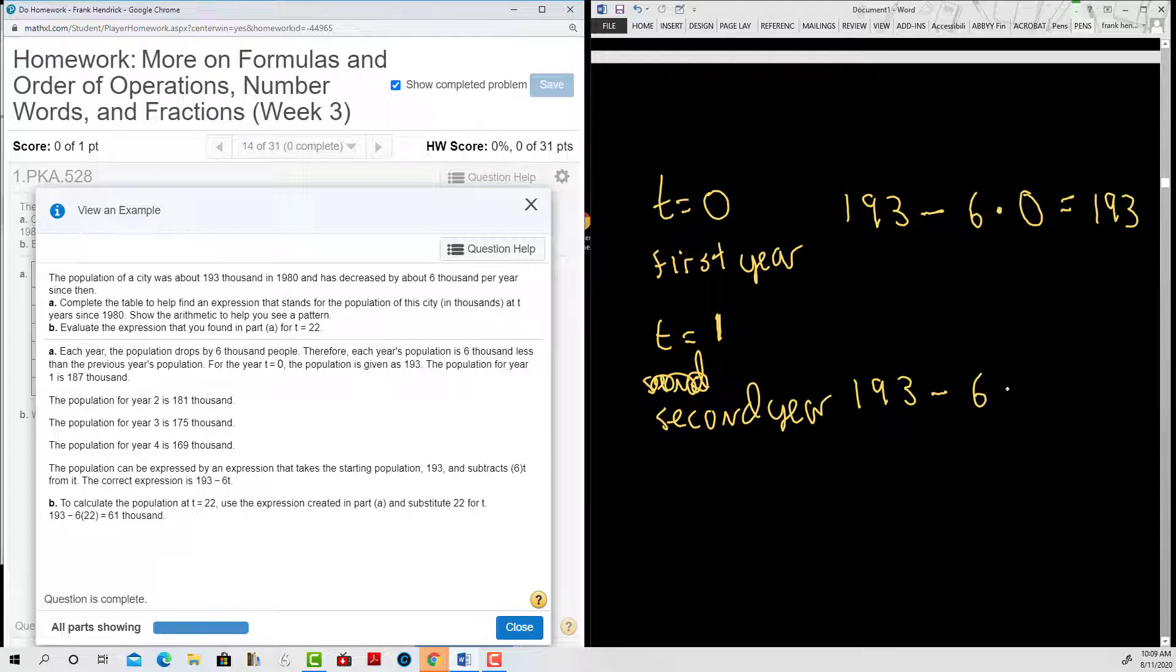And this is one year later, so I'll put a 1 there. It'll also give me 193 minus 6 is 187. So I went down.